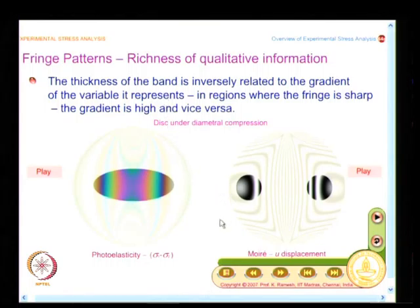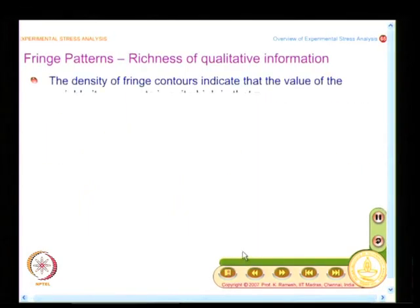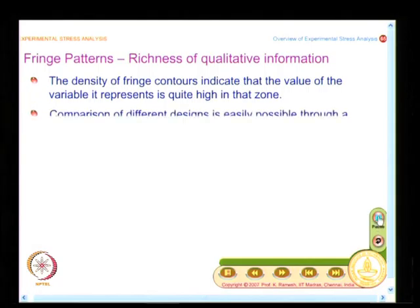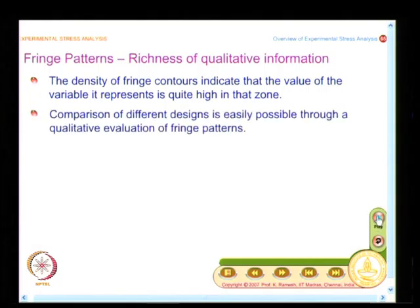This is one qualitative piece of information you get. The density of fringe contours indicates that the value of the variable it represents is quite high in that zone. Suppose I want to compare two different designs — the ideal way is to take the fringe pattern for both cases and compare them to evaluate the different designs based on qualitative appreciation. So it is used as an optical comparator.